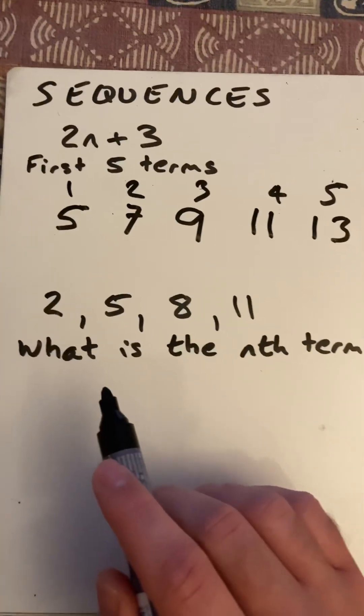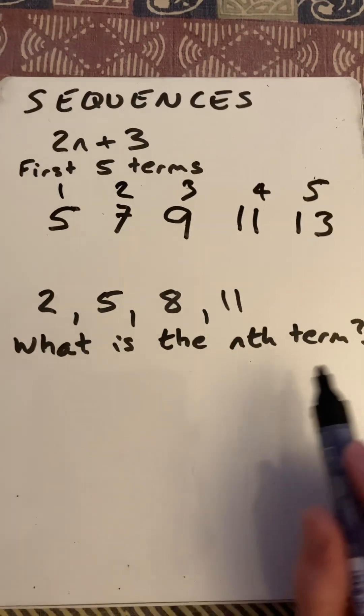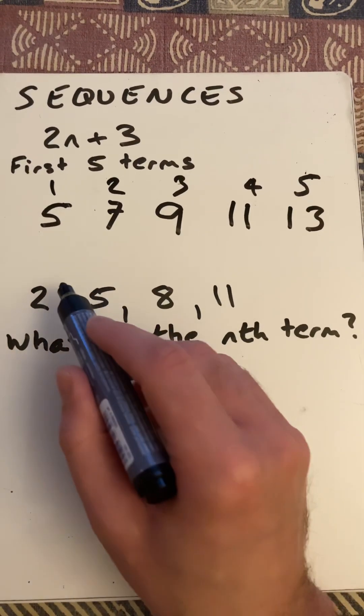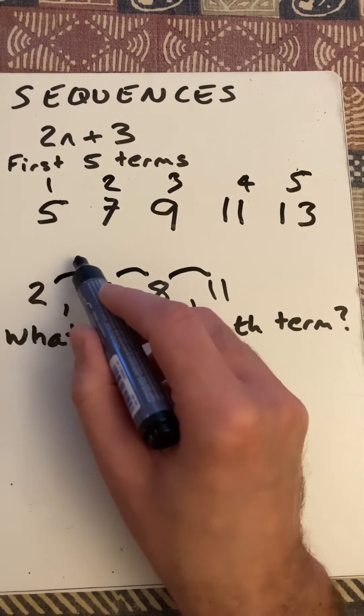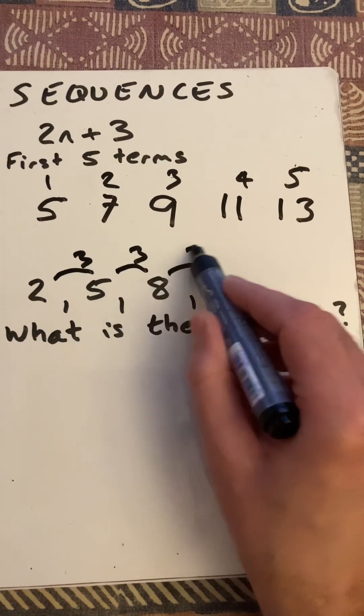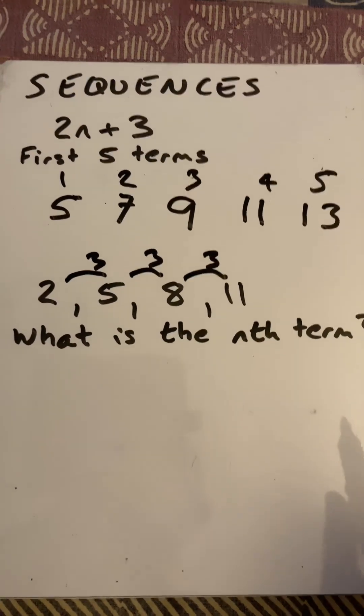So looking at it the other way, if I have the sequence 2, 5, 8, 11, and I want to work out what is the nth term, well, I'll start by looking at what the gap is. How much am I going up each time? And I can see I'm going up by the same amount. So I know it's a linear arithmetic sequence.